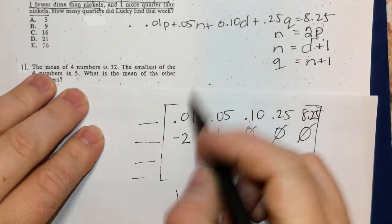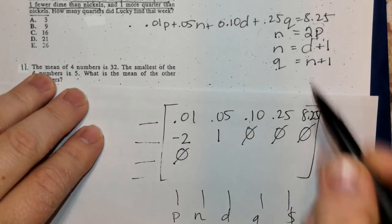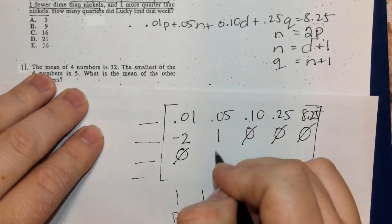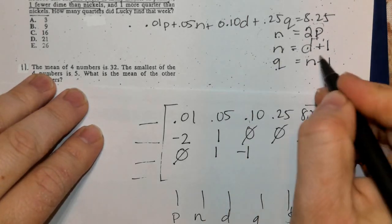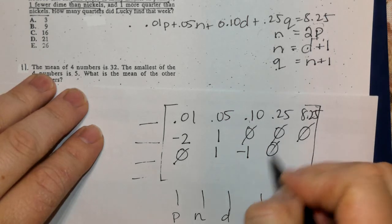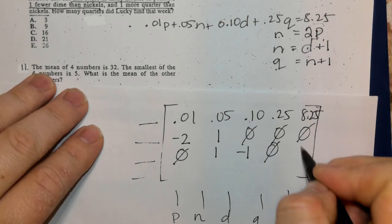In this problem for D + 1 = N, there are no P's. There is 1N. When the D comes across the equal sign, it becomes negative 1. There are no Q's, and the number 1 remains on the right.